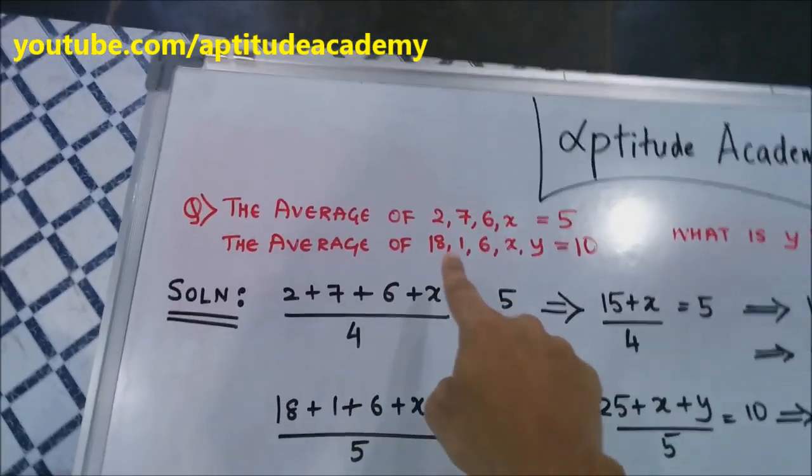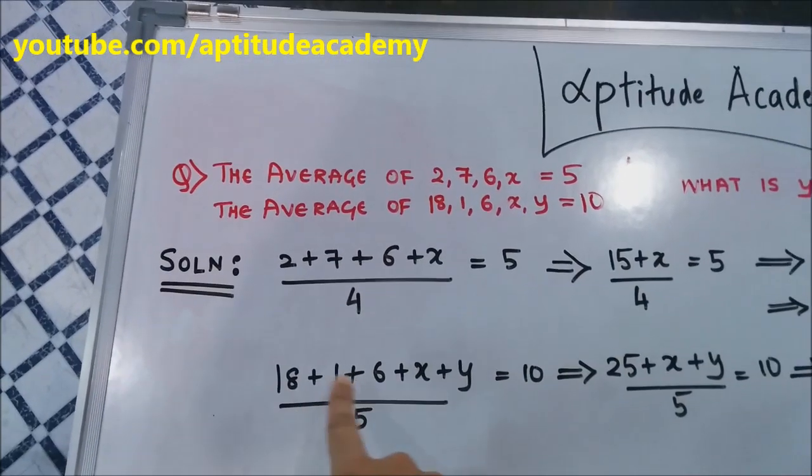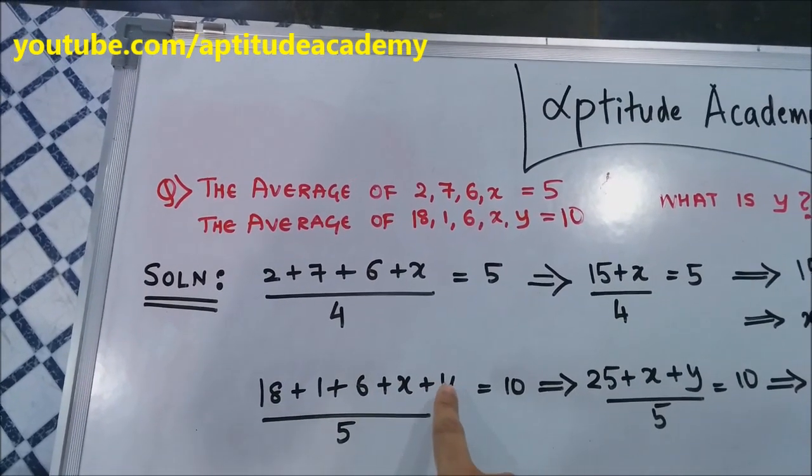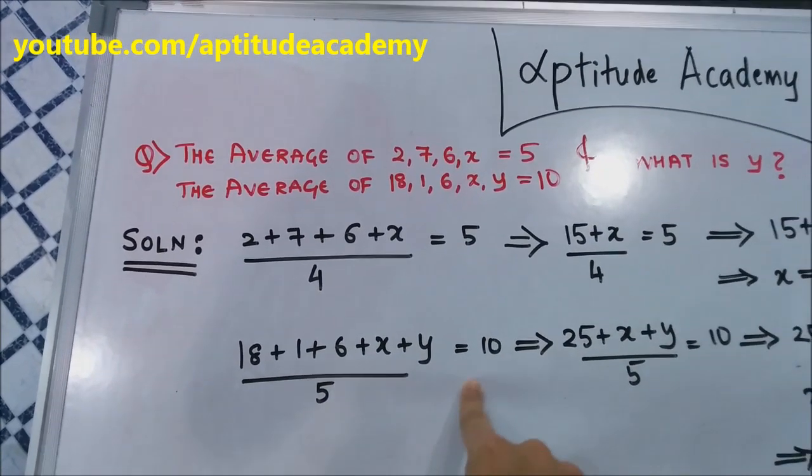Now, go to the second line. The average of 18, 1, 6, x, y is equal to 10. Now, 18 plus 1 plus 6 plus x plus y by 5. That's the average. Five terms, so divide by 5, is equal to 10.